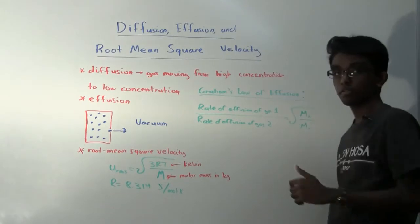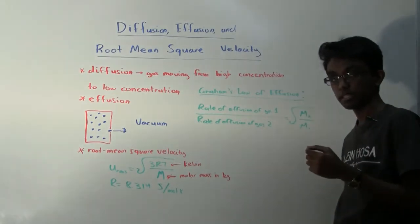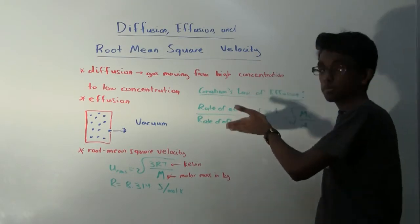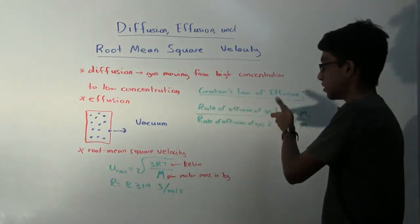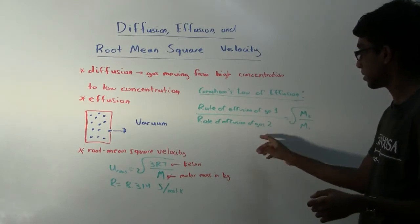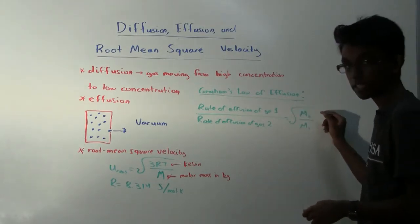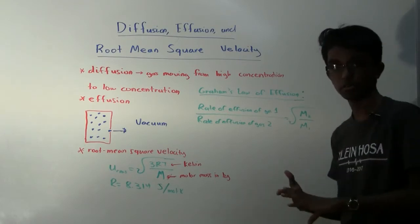And Graham's law of effusion helps us find the rate of effusion for a container. So Graham's law of effusion says that the rate of effusion of gas 1 divided by the rate of effusion of gas 2 equals the square root of the molar mass of gas 2 divided by the molar mass of gas 1.